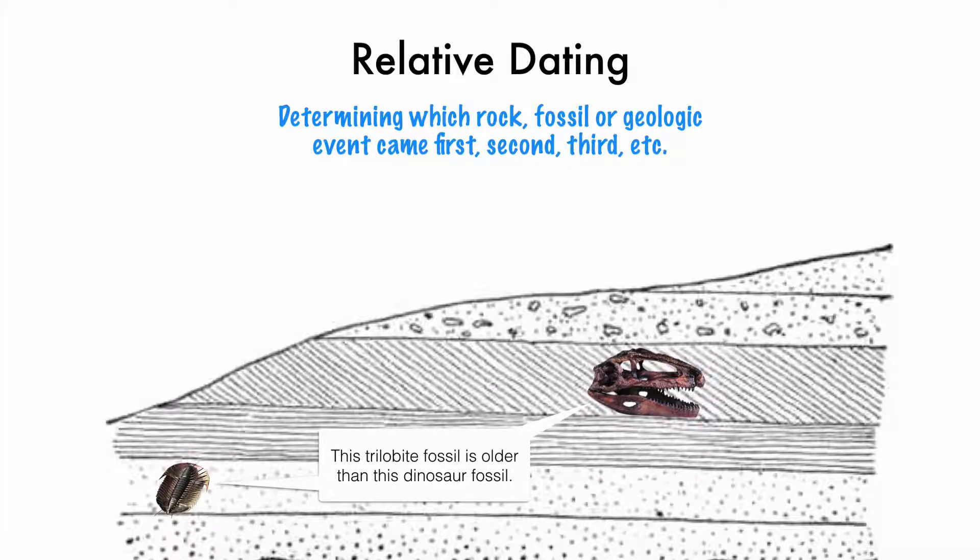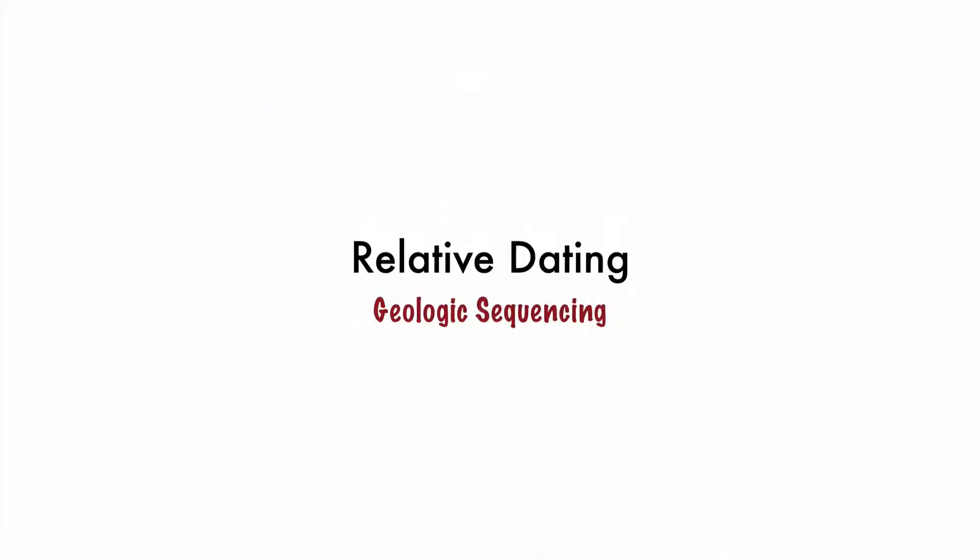So if we look at the layers of rock shown in this picture, I can assume that the trilobite fossil is older than the dinosaur fossil because it's located further down in the ground. So relative to one another, the trilobite is older than the dinosaur fossil. So that's really where we'll be taking this video, just focusing on geologic sequencing.